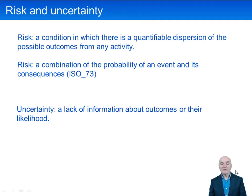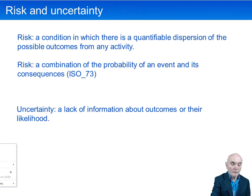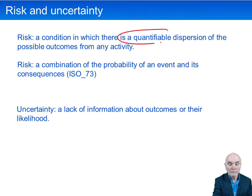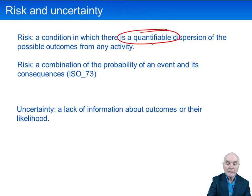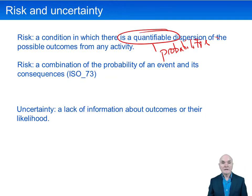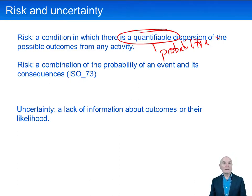Risk is a condition in which there is a quantifiable dispersion of the possible outcomes. In other words, if you're dealing with risk, strictly speaking, you can attach probabilities to what's going to happen. So if you're developing a new product, it could either sell well or badly. If you can say it's going to sell well with a probability of 0.7 and badly with a probability of 0.3, then you are in the area of risk.